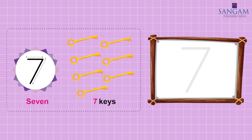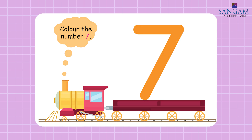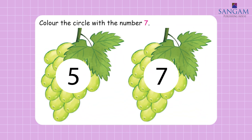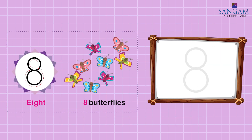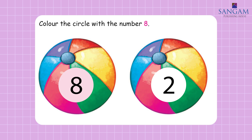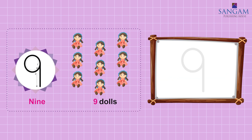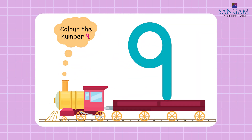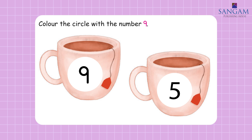Seven. Seven keys. Trace the number seven in the boxes. Eight. Eight butterflies. Trace the number eight in the boxes. Colour the number eight. Colour the circle with the number eight. Nine. Nine dolls. Trace the number nine in the boxes. Colour the number nine. Colour the circle with the number nine.